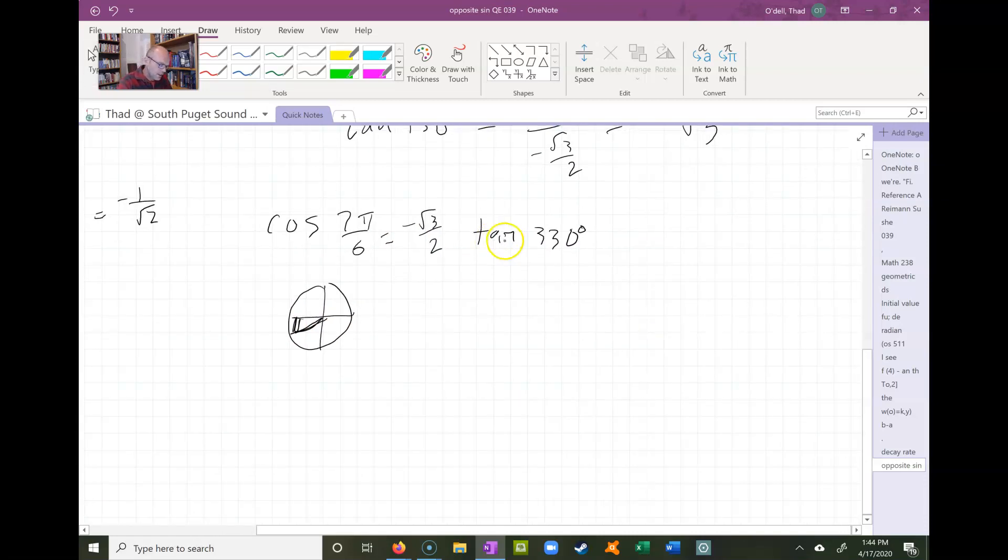And then finally tangent of 330. Again I draw a quick little unit circle, draw my lines. 330 is right about there, it's almost 360, and this also forms a 30-60-90 triangle with a reference angle of 30 degrees. So I know that the wrapping function, we know that that's going to be √3 over 2 and negative one half. And remember tangent is sine over cosine, so I'm going to have negative one half on top and √3 over 2 on the bottom, which reduces to negative one over √3.